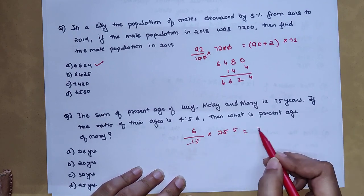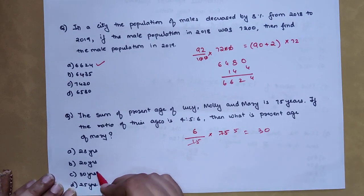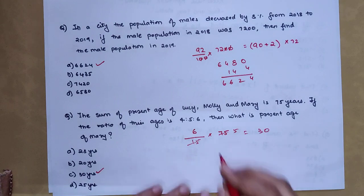So you get 5, so you get 30. Your option C is your answer. So now time for your DIY.